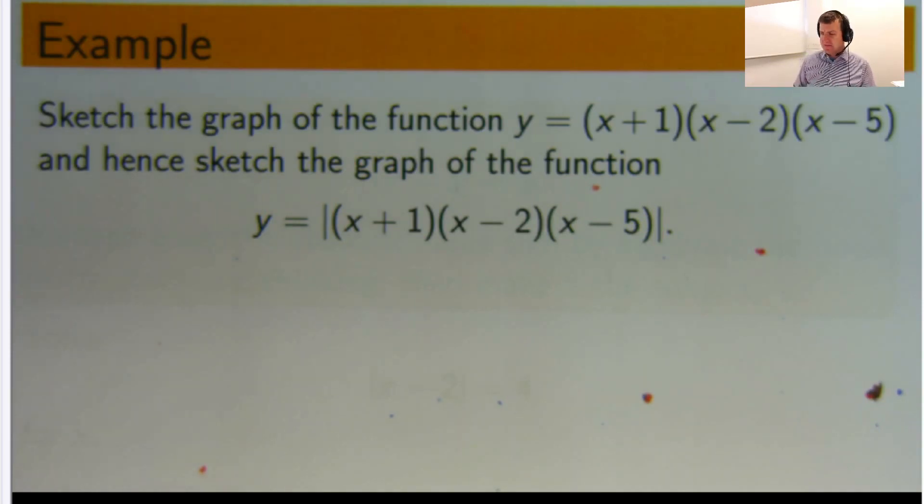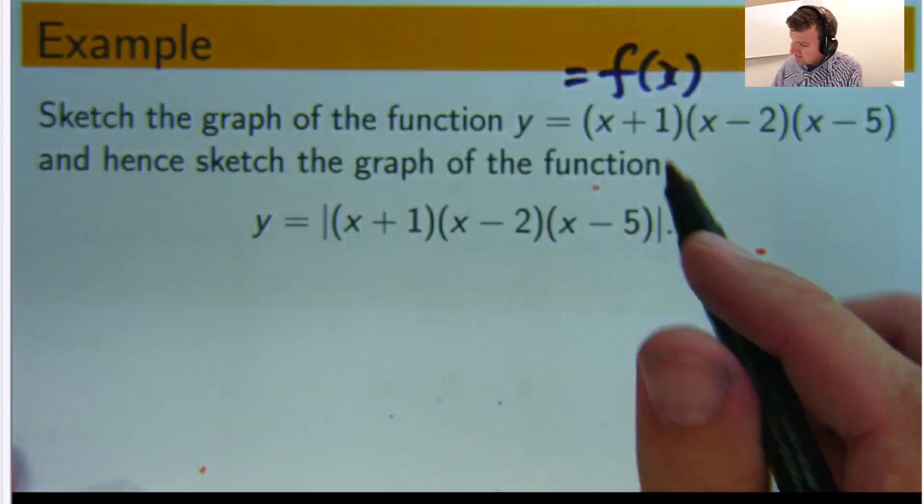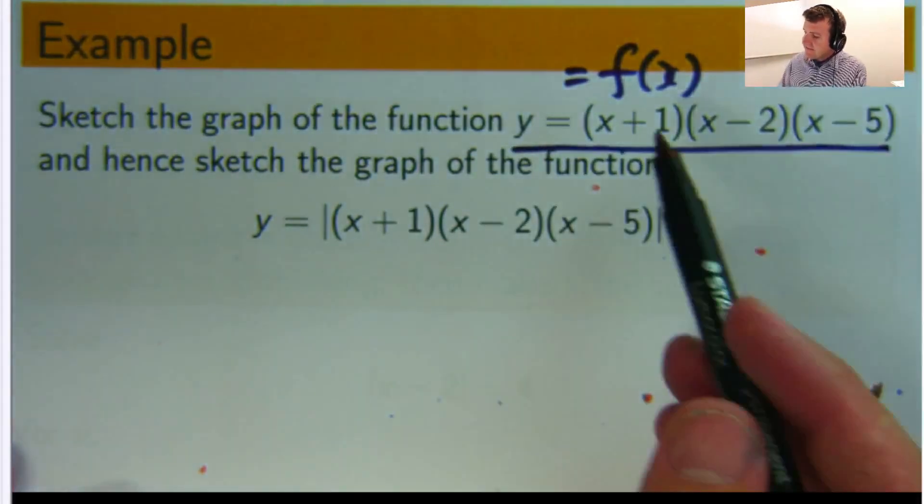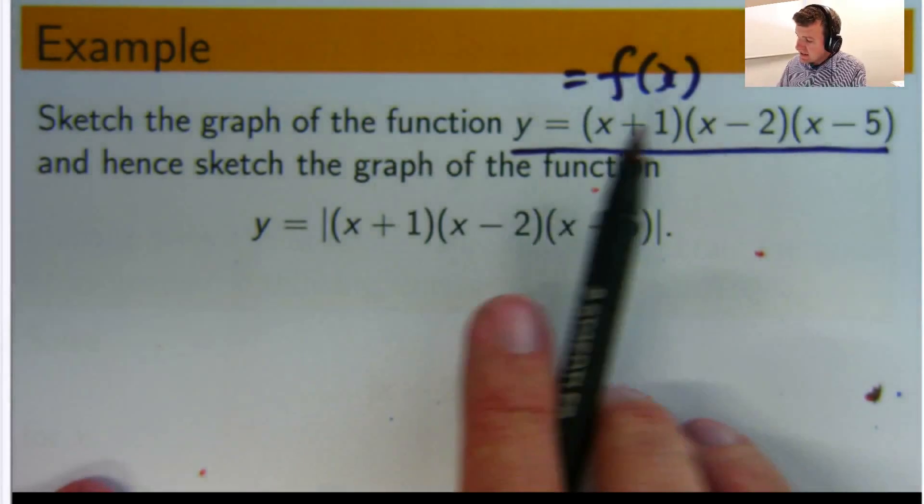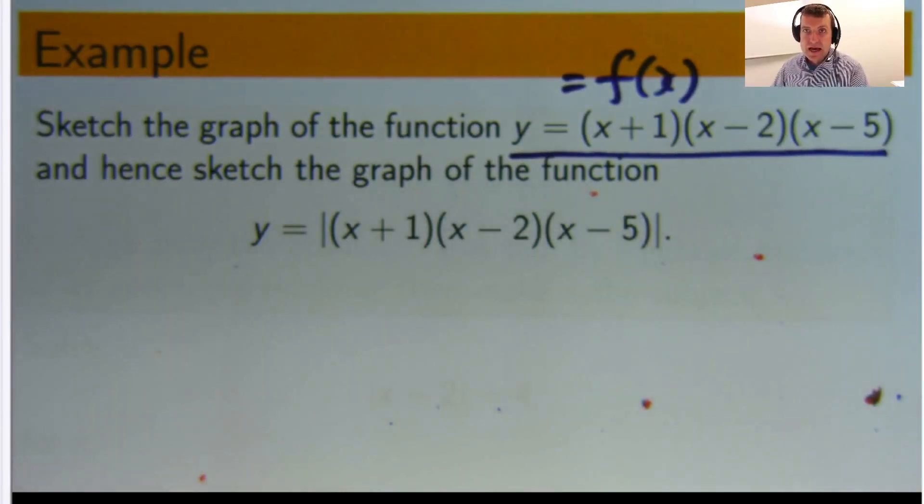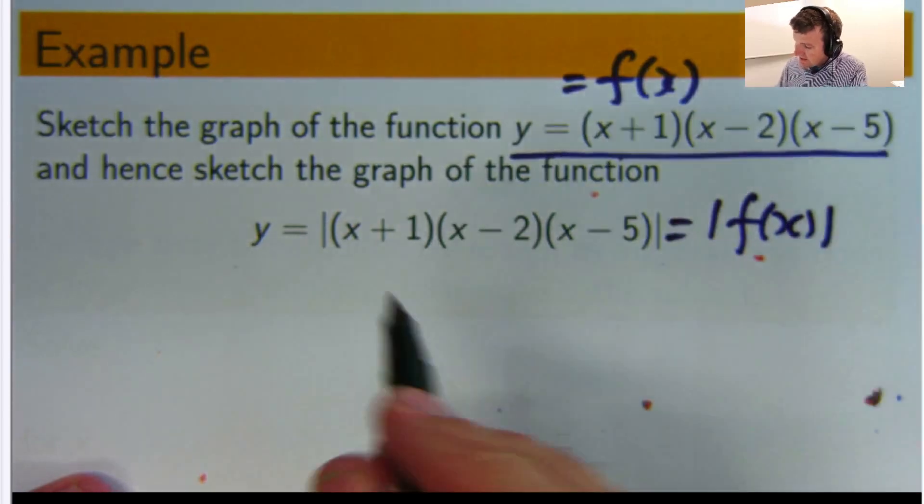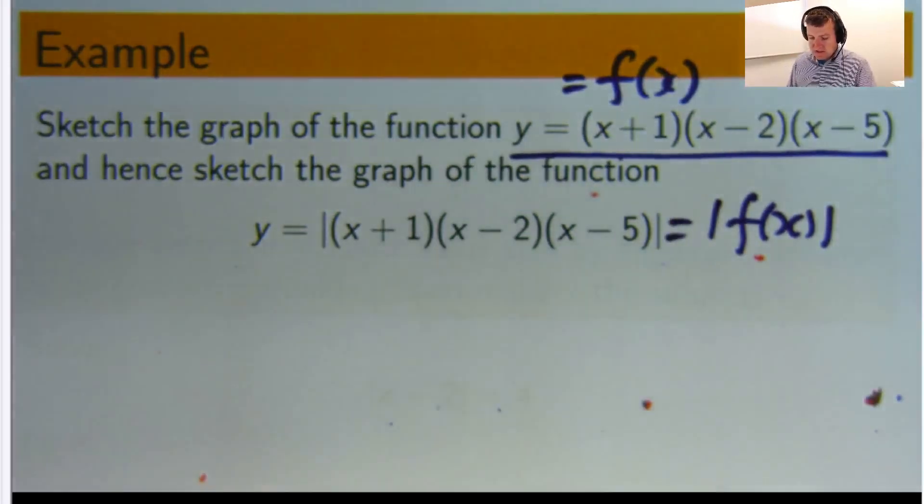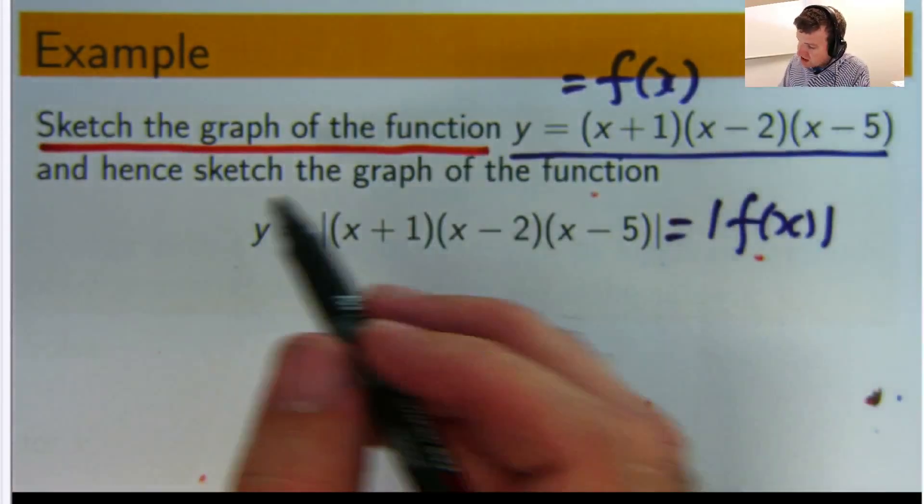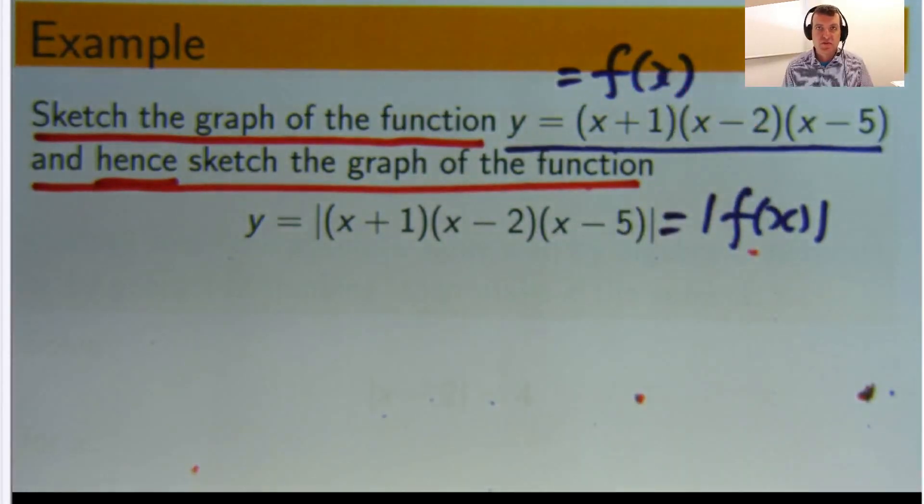So let's have a look at the example. So here we've got a function. It's factored into a nice lovely linear factor form. That's good because it tells us something about how we can sketch the graph of that function straight away. And then we're given the same function just with absolute values. The first thing we're asked to do is to sketch the graph of the original function and hence sketch the graph of the absolute value function. So from this graph sketch this graph. That's what it's really asking you to do.